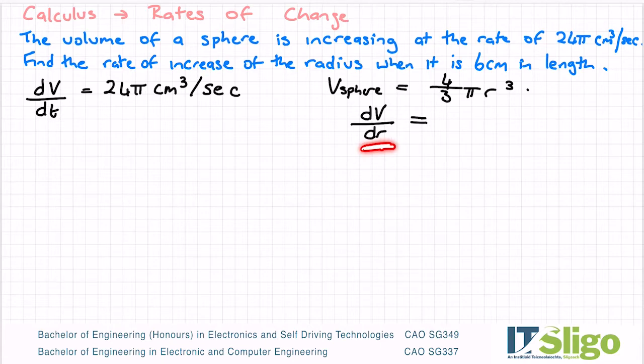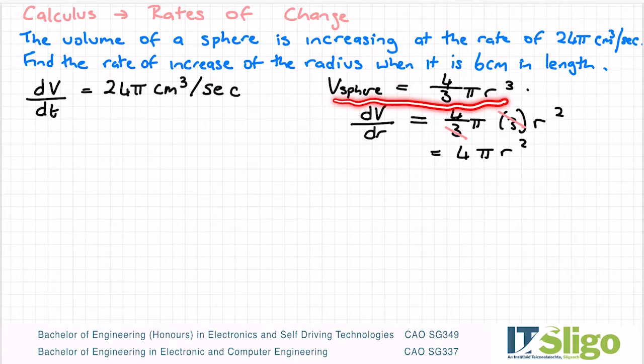The only thing you can differentiate volume with respect to in a sphere is the radius. So let's do that. It's 4/3 π, and then the radius: take down the power, reduce the power by one, so it's 3 times r². The 3 on the top and the 3 on the bottom cancel, so you end up with 4πr². That was just a closer look at the volume of a sphere.